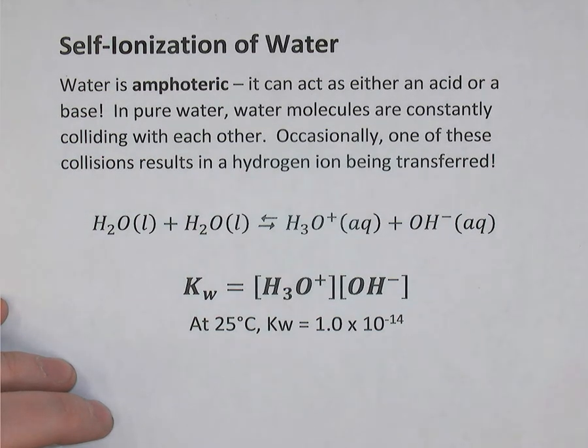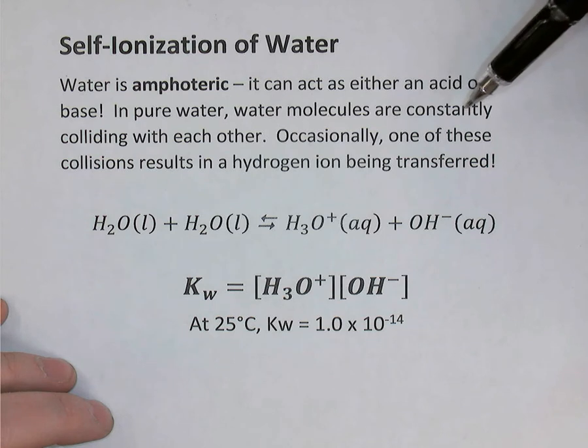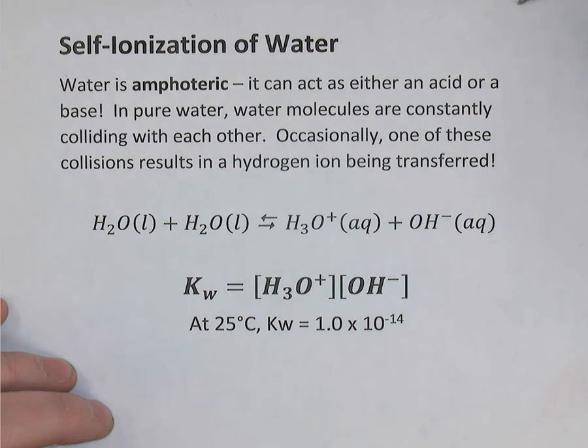So if you have pure water or if you have an aqueous solution where there's lots and lots of water molecules, you can imagine collision theory that those water molecules are constantly bumping into each other. During most of those collisions, nothing happens. They're unsuccessful collisions. But very rarely in one of those collisions, one water molecule will end up donating a hydrogen ion to another. So there'll be a little tiny acid-base reaction, but it happens very rarely.